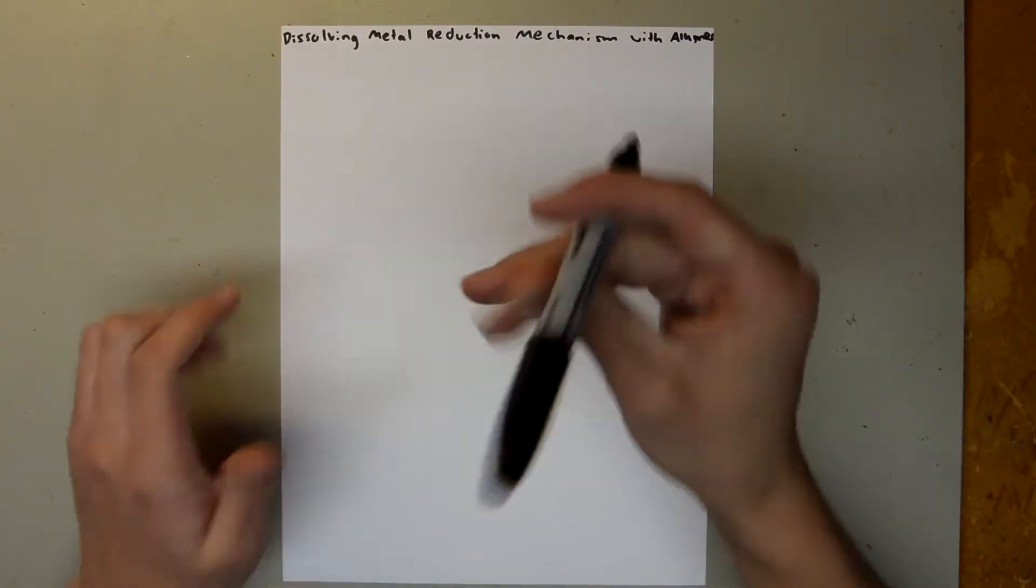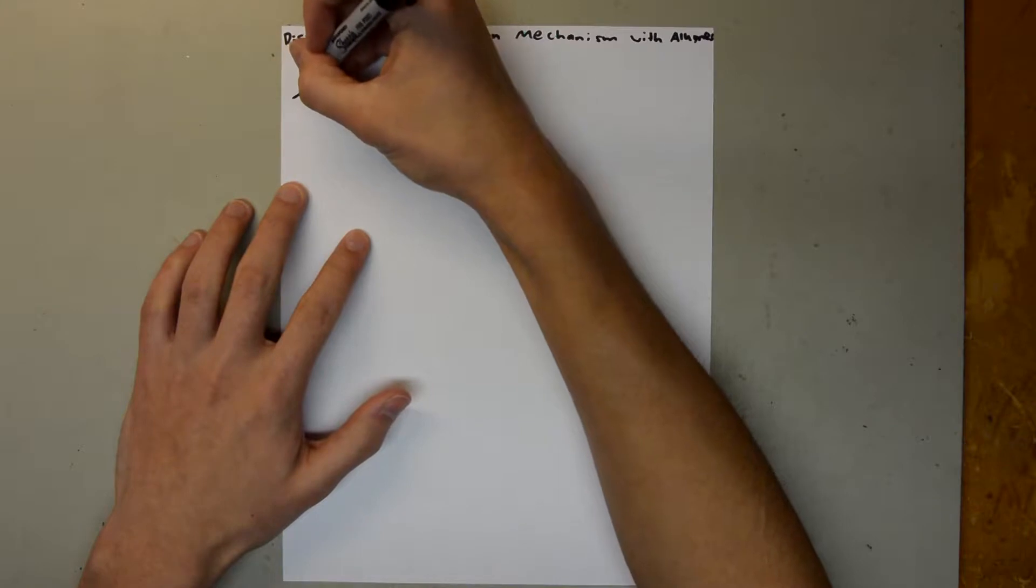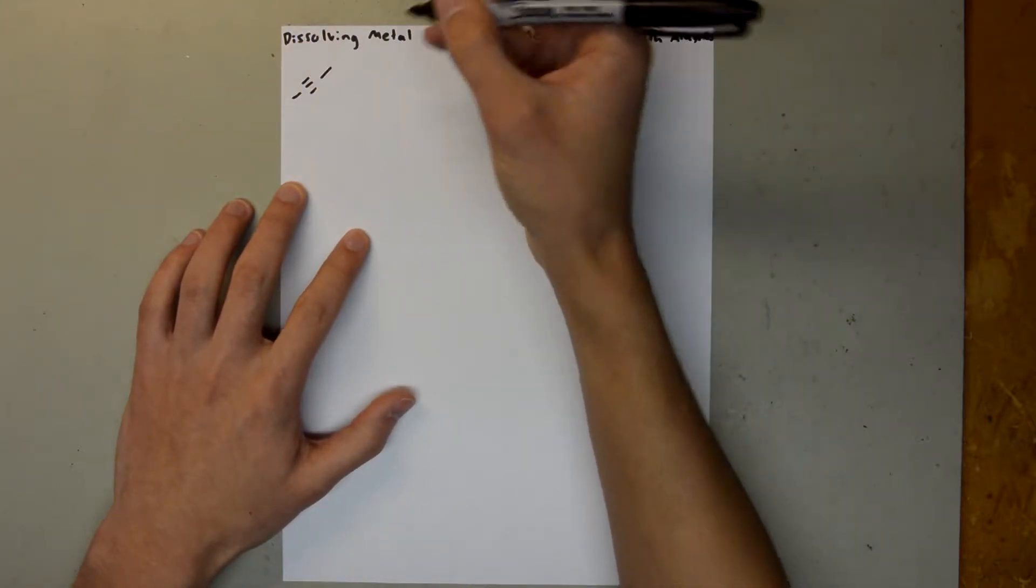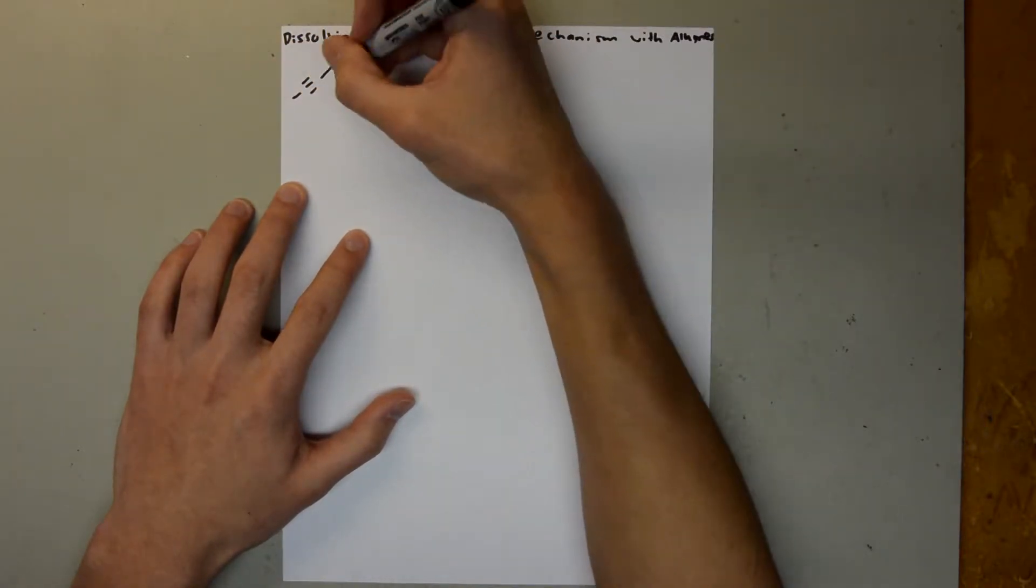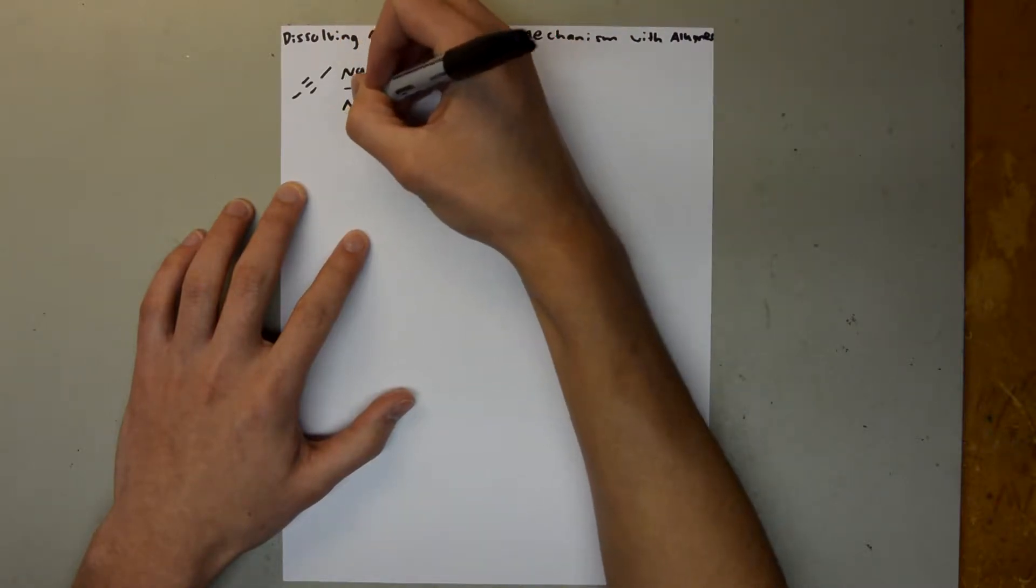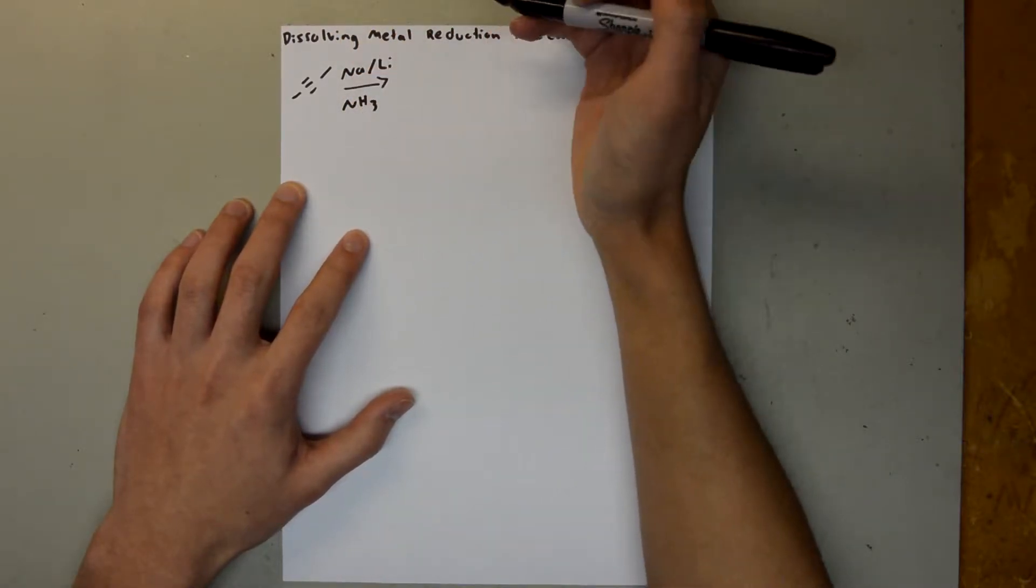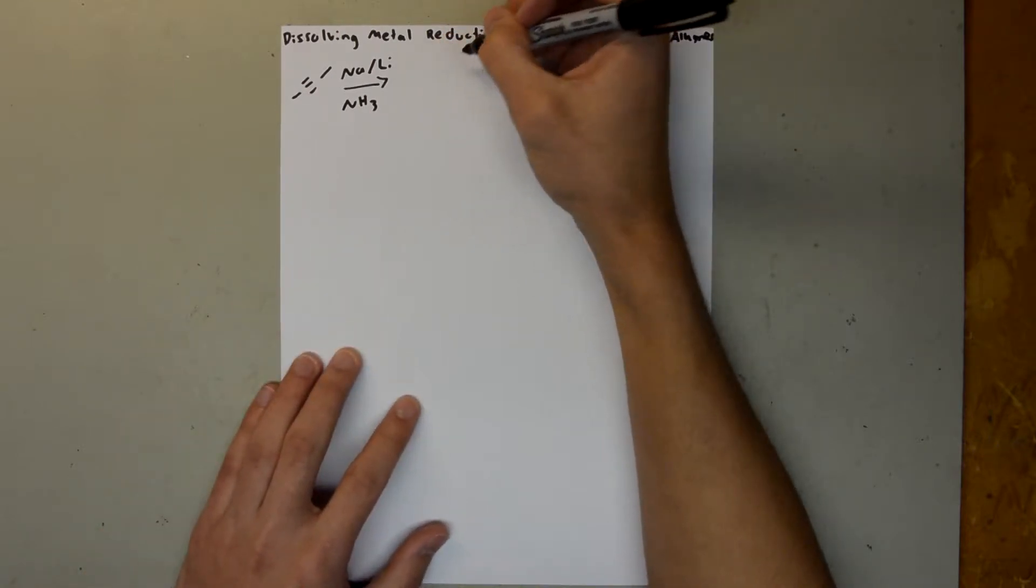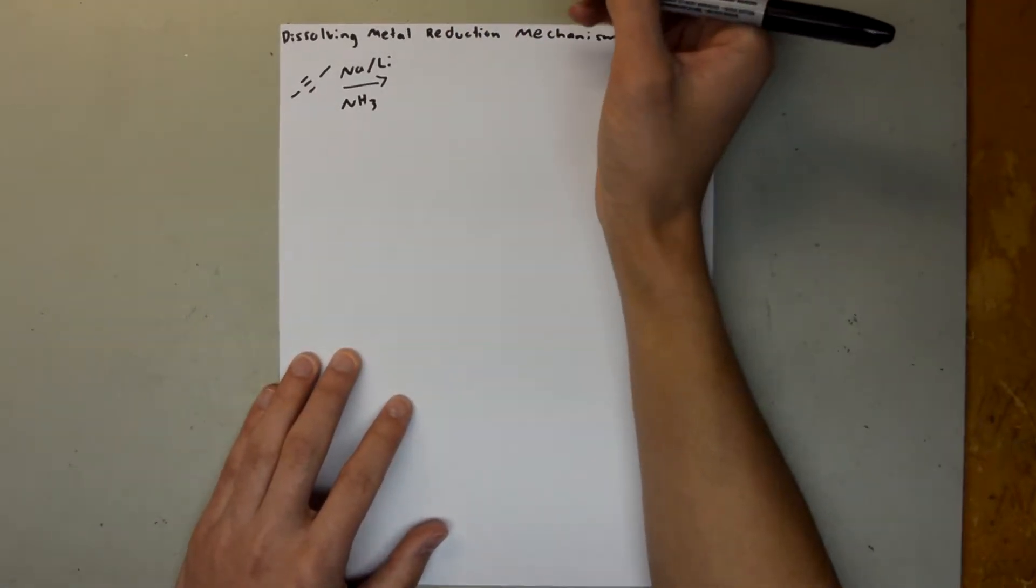So I want to start with this alkyne, and then that's going to react. You can either use sodium or lithium along with NH3, and then by the end of this mechanism, we will know what this product or products will be. So I'm going to use lithium.